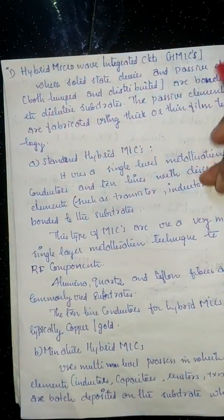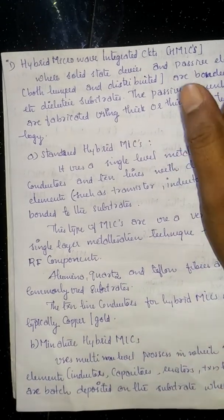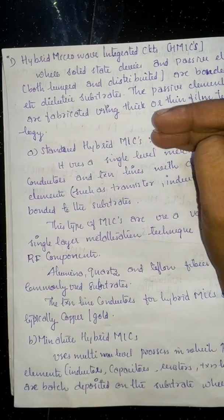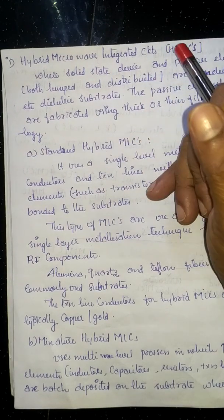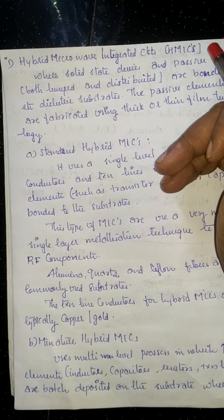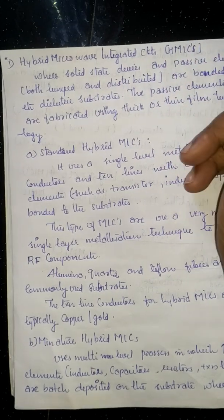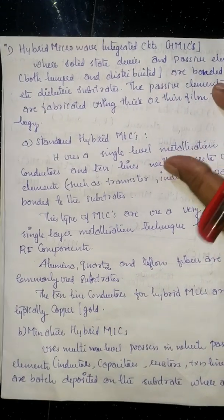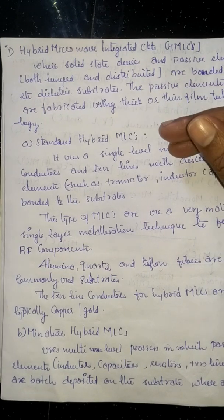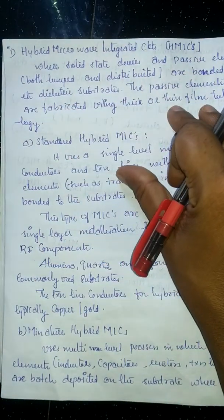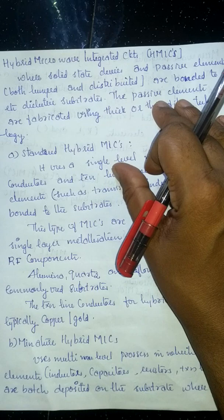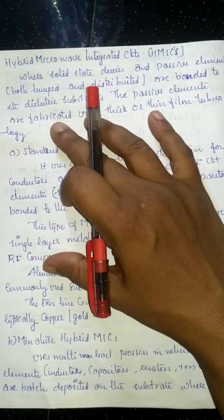In hybrid microwave integrated circuits, the single MIC chip contains three elements. The passive elements — that is, lumped elements — and the solid-state devices have certain connections. For those connections, a substrate is used. In hybrid MICs, the solid-state devices and passive lumped elements are bonded to a dielectric substrate.